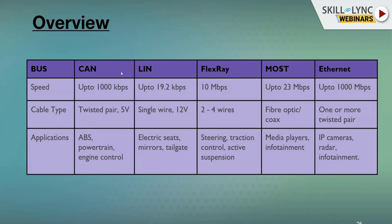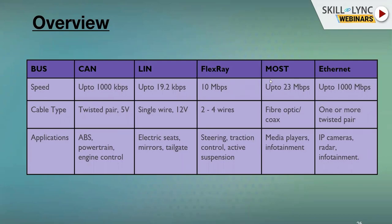This overview shows all the protocol types with their speed, cable type, and application. Speed is a very important factor in automotive industry. For low-speed requirements we choose LIN, for medium speed we choose CAN, and for very high-speed requirements we choose FlexRay, MOST, or Ethernet — depending on the data to be transmitted.